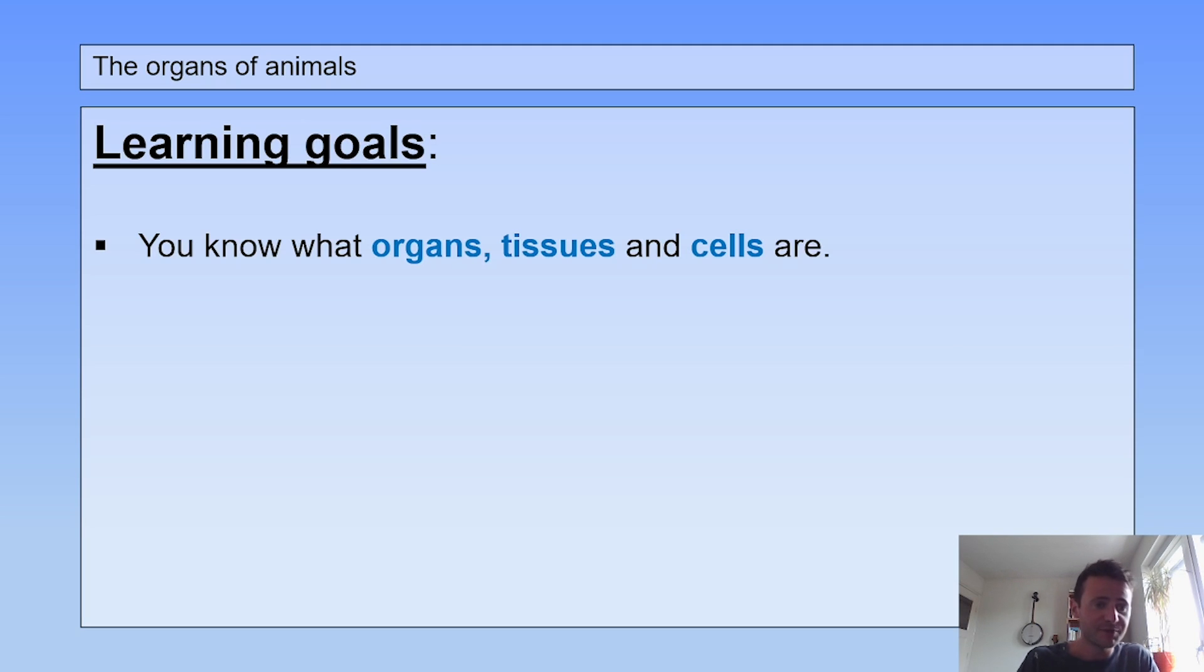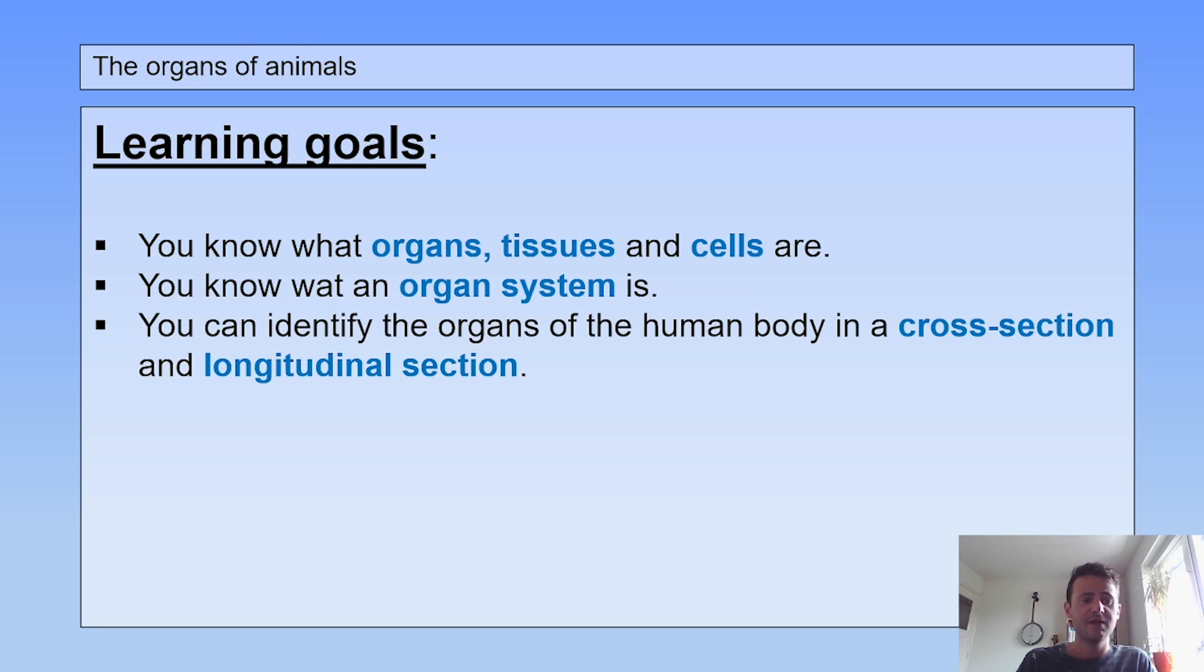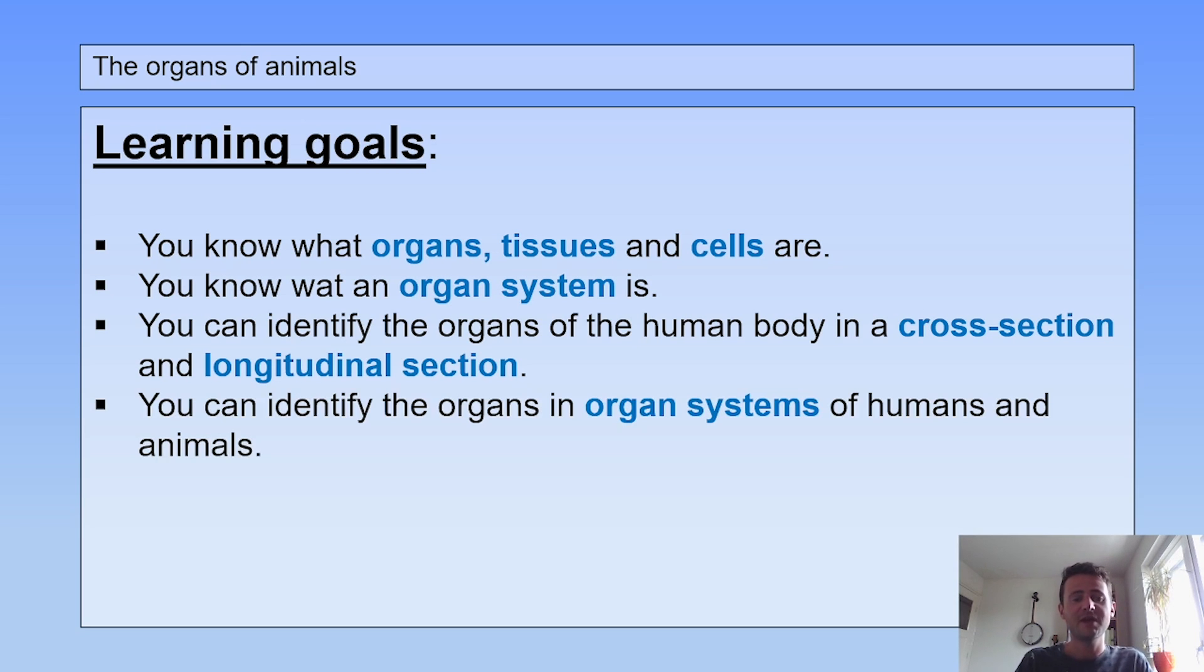The learning goals: you know what organs, tissues and cells are, you know what an organ system is, you can identify the organs of the human body in a cross-section and a longitudinal section, you can identify the organs in organ systems of humans and animals.